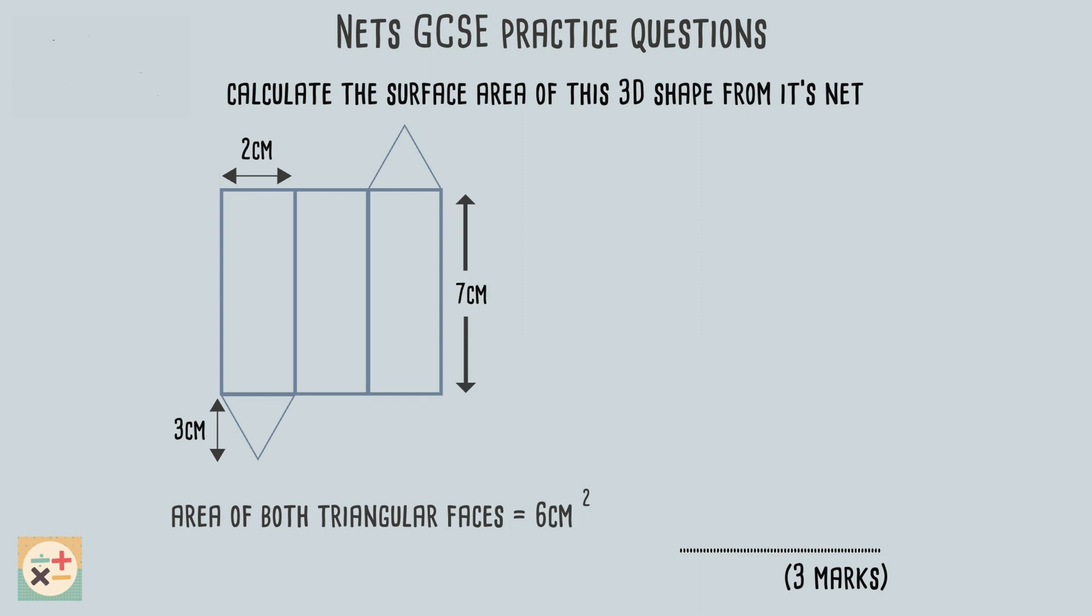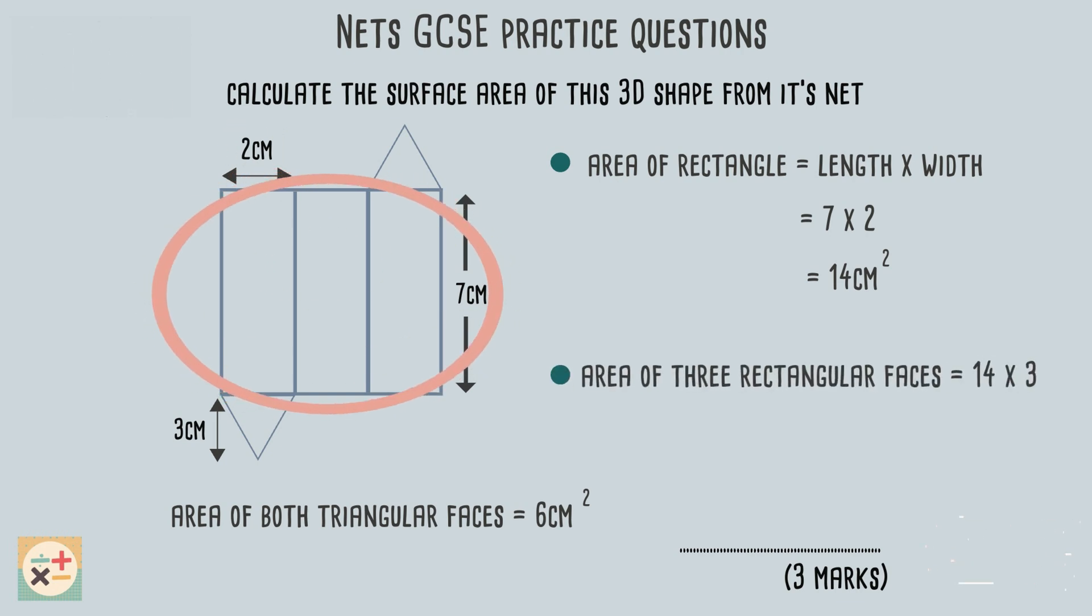To find the area of a rectangle, we just need to multiply the length by the width. In this case, we multiply the length of 7 cm by the width of 2 cm. As there are 3 rectangular faces, we can multiply our answer by 3 to find the total area of all 3 rectangles. Now that we have found the area for the triangular and the rectangular faces, we can add these together to find the total area of the net, which in turn provides us with the surface area of the 3D shape.